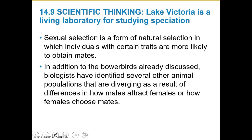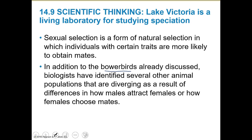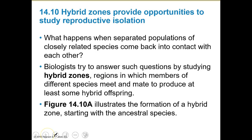Sexual selection is a form of natural selection in which individuals with certain traits are more likely to obtain mates. Bower birds are a lovely example — they make these big towery structures called bowers to attract females, and look how pretty these things are.